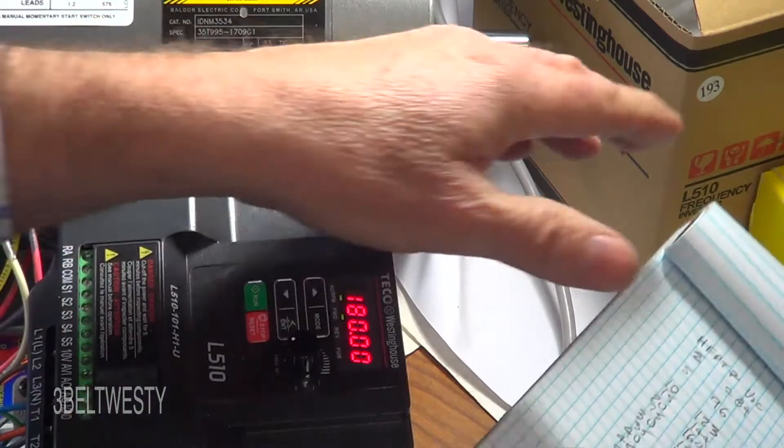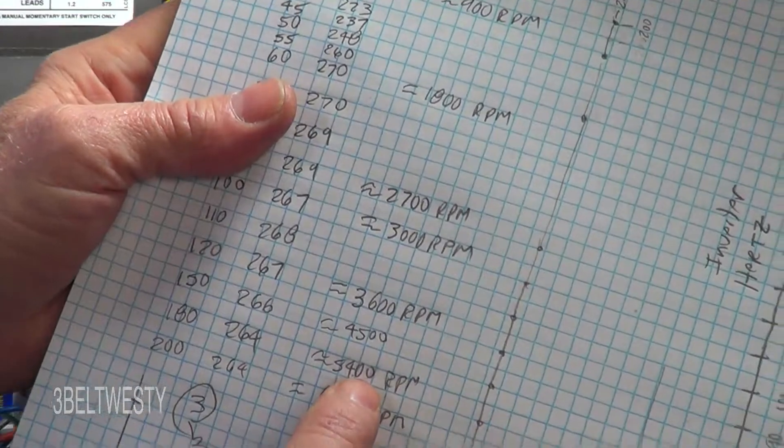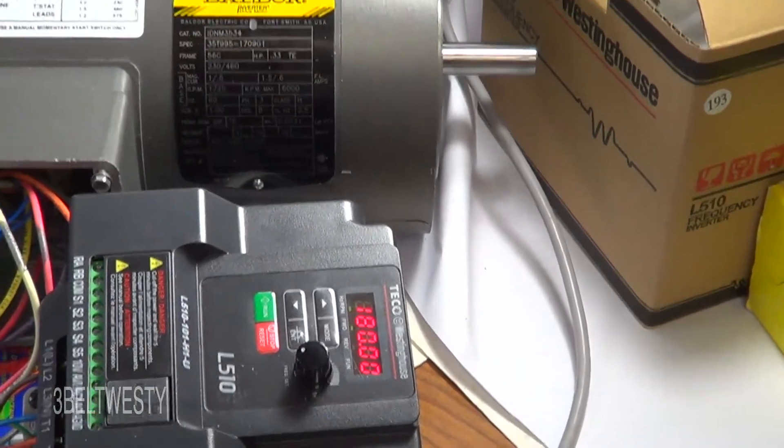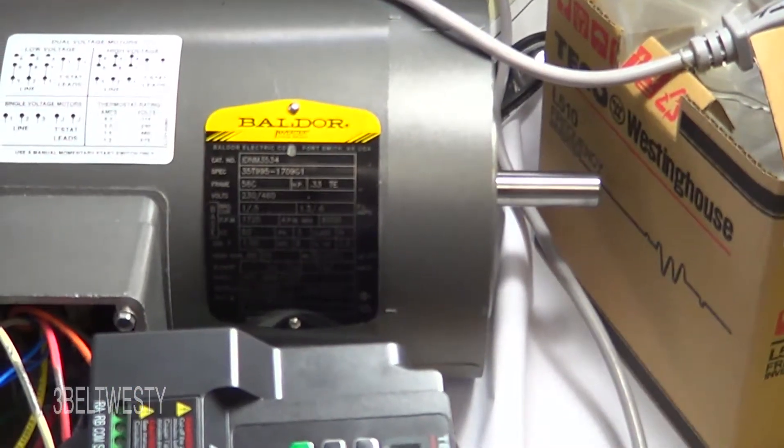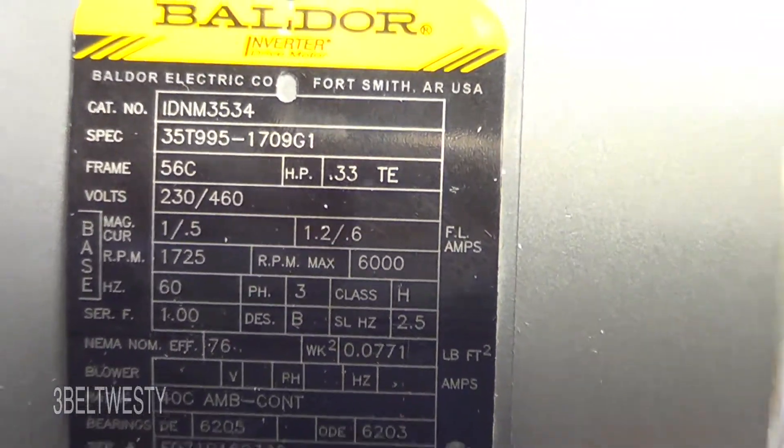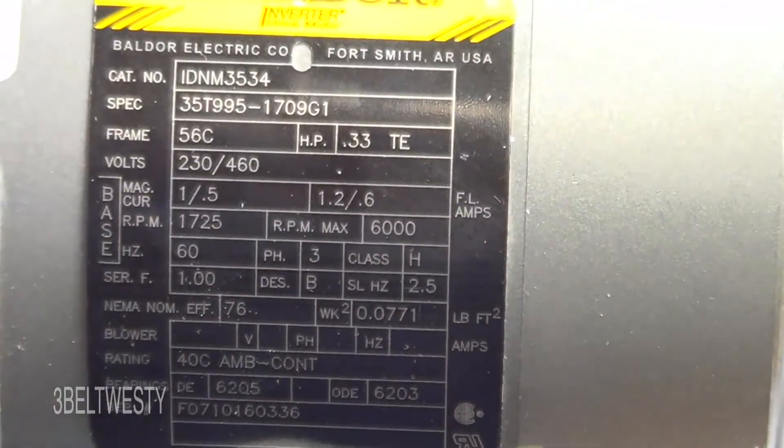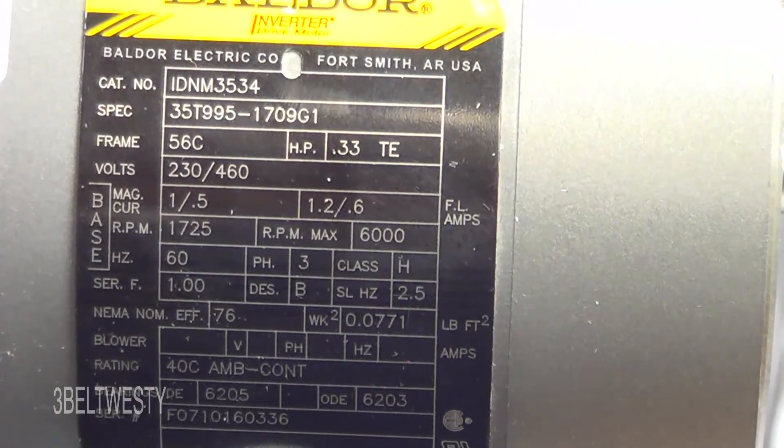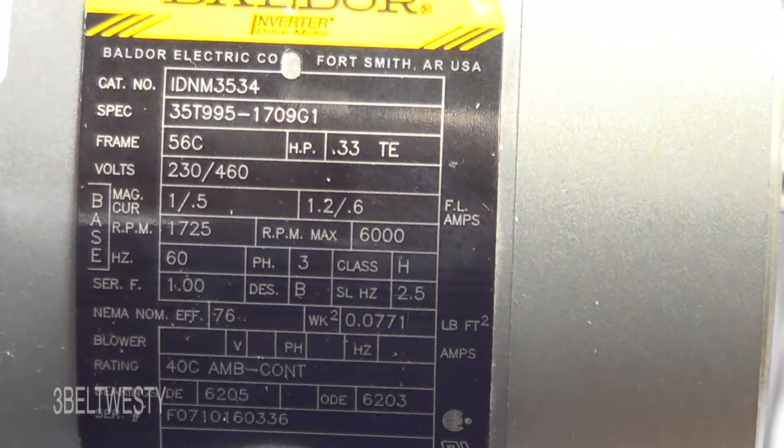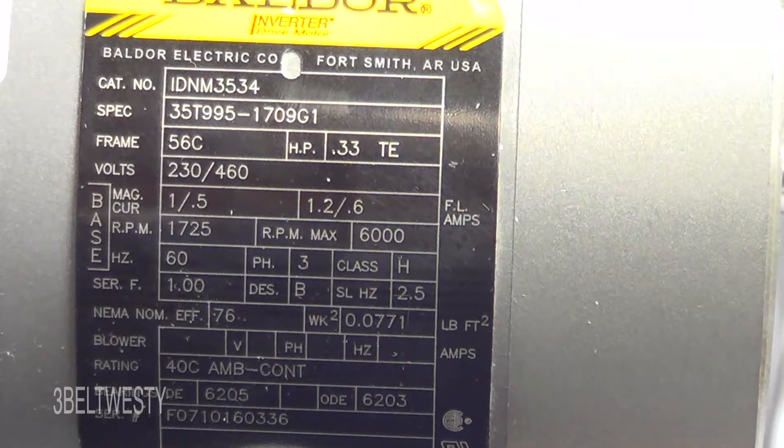So 180 Hertz is 5400 RPM. This motor over here, it's got a max of 6000, so 6000 would be 200 Hertz.